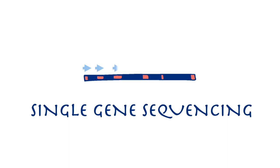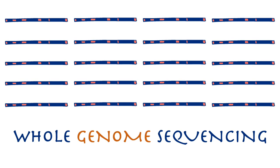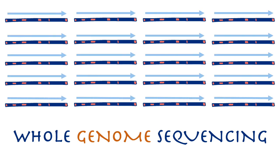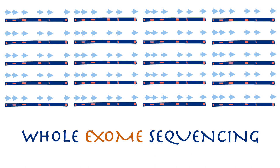In the past, scientists typically sequenced just one gene at a time. But today scientists can use new technology that allows them to look at the sequence of all 21,000 genes in just one step. When scientists look at the entire genetic sequence, it's called whole genome sequencing. When scientists sequence the exons only, it's called whole exome sequencing.